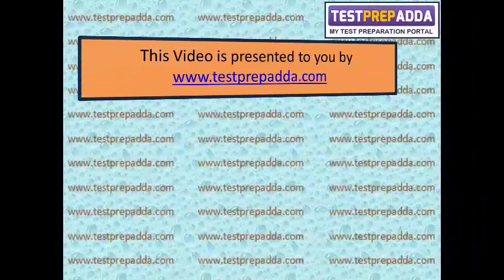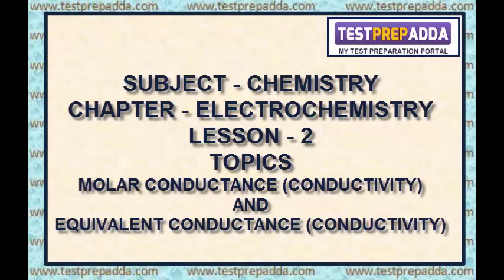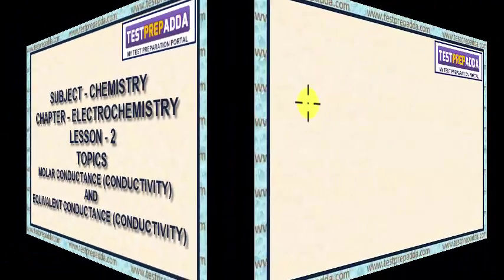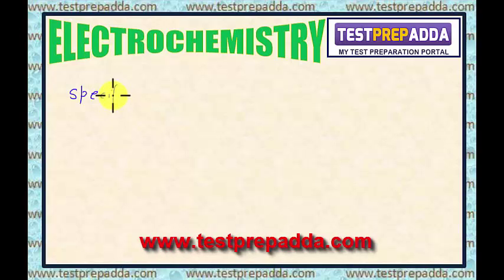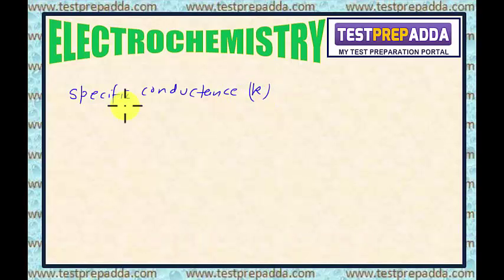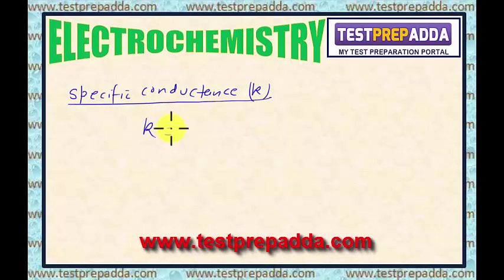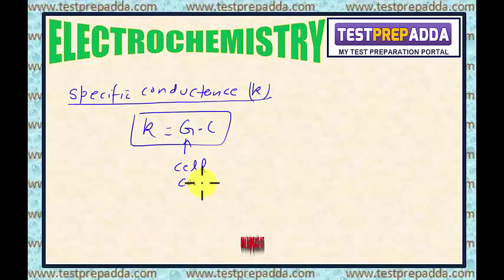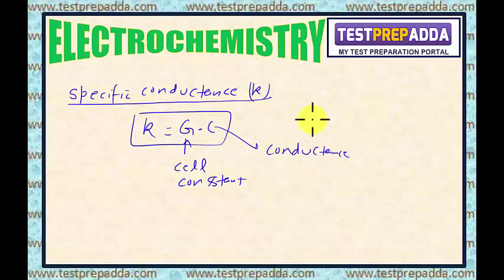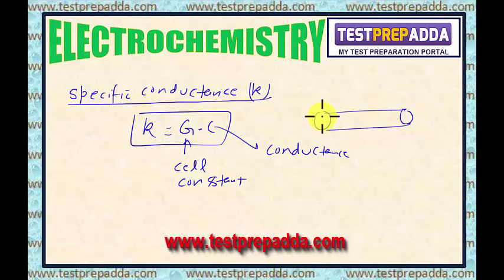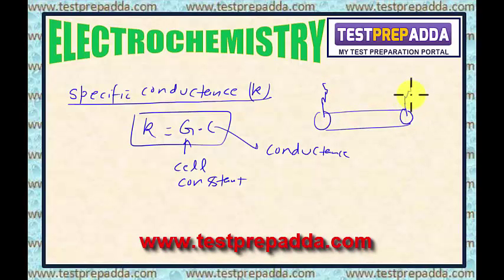This video is presented by www.testprepanda.com. Dear students, in the previous session of electrochemistry, I talked about specific conductance K. I defined K as G into the cell constant, where G was the cell constant and C was the conductance of the electrolytic material.